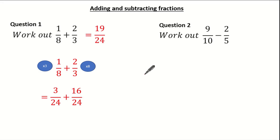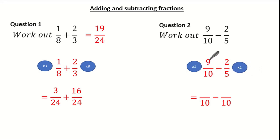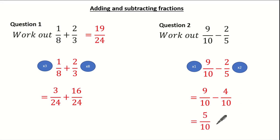Let's have a look at another question using subtraction. We have 9 tenths and we're subtracting 2 fifths. Identifying the lowest common multiple of 10 and 5 gives us 10, so I need to make my denominator 10 for both fractions. What do I multiply 10 by to give 10? Simply 1. And what do I multiply 5 by to give 10? It's 2. So: 9 times 1 is 9, 10 times 1 is 10, 2 times 2 is 4, and 5 times 2 is 10. Now my denominators are the same, giving me a final answer of 5 over 10.